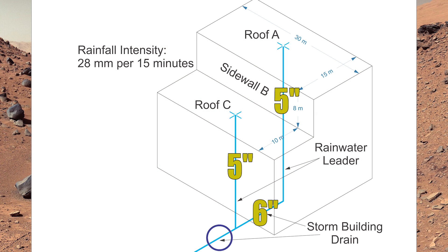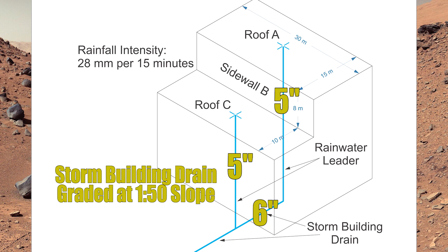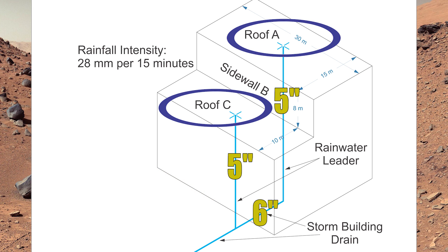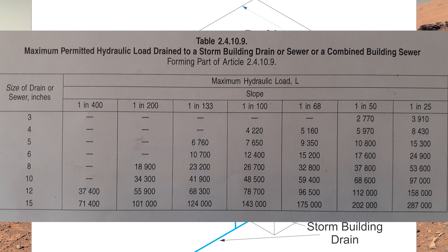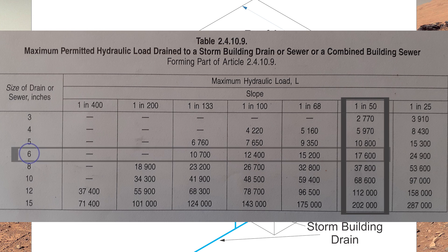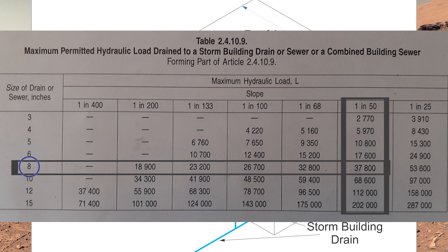Now the rainwater leaders converge and I have a storm building drain still graded at 1:50. Combining everything draining from A and C together: 12,600 liters plus 11,760 liters equals 24,360 liters. Going back into table 2.4.10.9, down the 1:50 column — stopping at six inch is only good to 17,600 liters, which is not enough. Going down one more, that is good to 37,800 liters, and that is an eight-inch storm building drain.